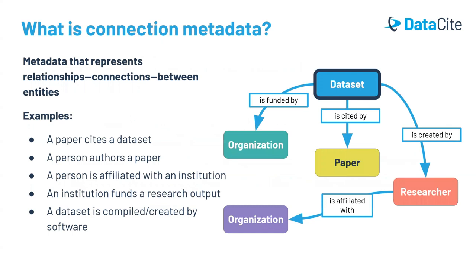Connection metadata is metadata that represents relationships or connections between different entities. For example, you could have connection metadata for a paper citing a dataset, a person authoring a paper, a person's affiliation with an institution, an institution funding a research project that generates many outputs, or datasets being generated by a piece of software. This metadata helps facilitate interoperability between persistent identifiers and persistent identifier systems, and open research infrastructure in general.